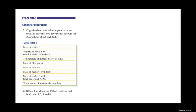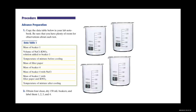Preparation: Copy the data table into your lab notebook, making sure you have plenty of room for observations. We have a copy in our binder, so you just need to fill in the data on each line. Obtain 4 clean dry 150 mL beakers and label them 1, 2, 3, and 4.